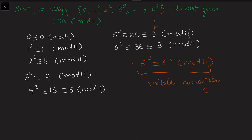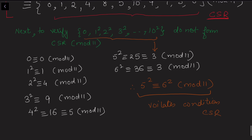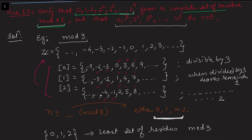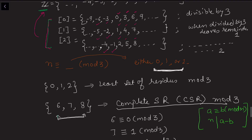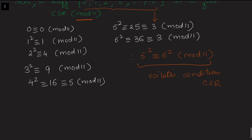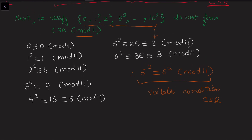This means 5² ≡ 6² (mod 11), which violates the condition for a complete system of residues, because no two elements in the set should be congruent to each other. Each class in mod 11 should be represented exactly once, just as I explained for the mod 3 case. Since this condition is violated, we conclude that {0², 1², ..., 10²} does not form a complete set of residues mod 11. I'll leave this video here and encourage you to try problem 12 — if you can't solve it, watch my next video.